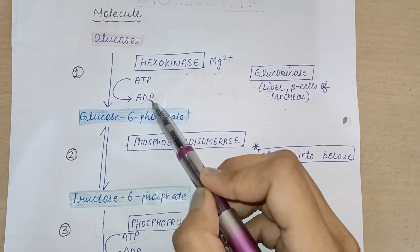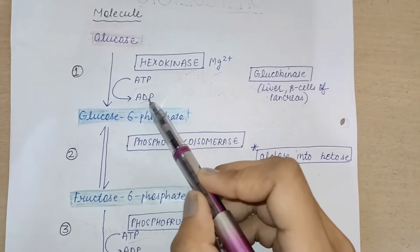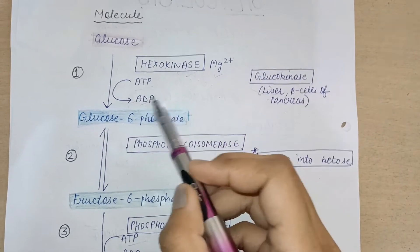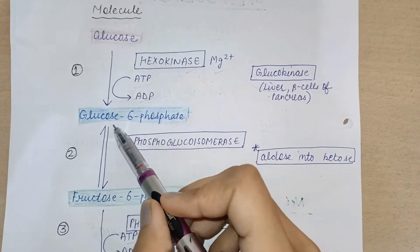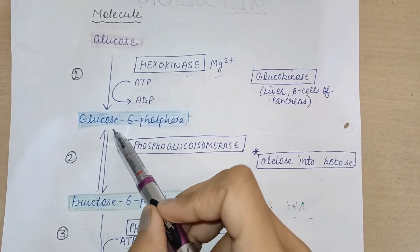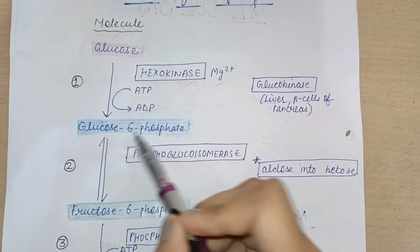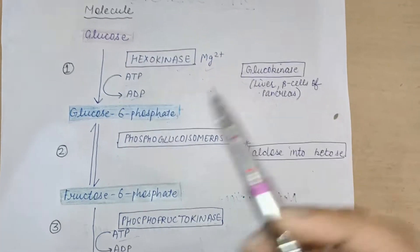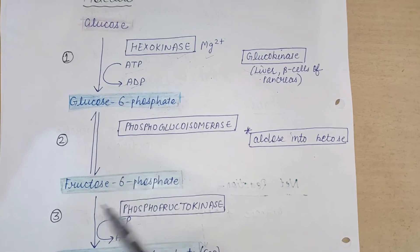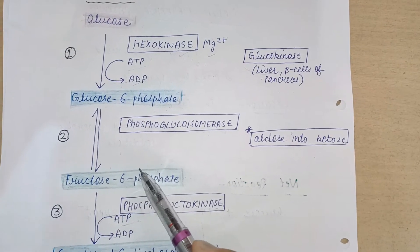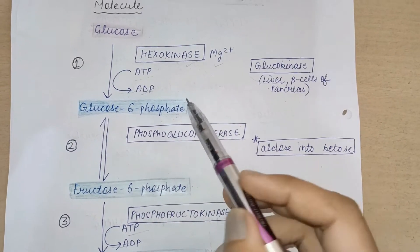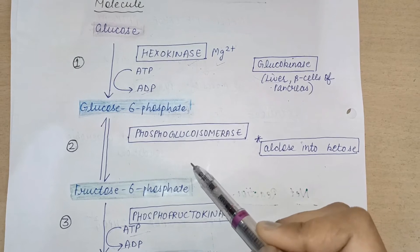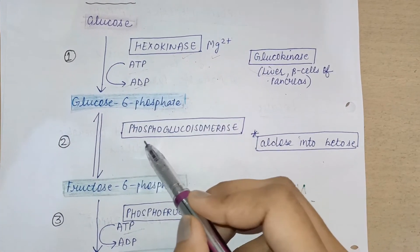Here the phosphate is derived from ATP, so ATP is converted into ADP as one phosphate is attached to the glucose. The molecule that is formed is glucose-6-phosphate.